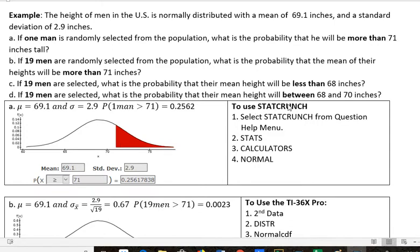And you can use StatCrunch to do that. In order to use StatCrunch, select StatCrunch from the question help menu, then stats, then calculators, then normal. And you'll see the picture here of what you'd want to enter. For the mean, we said it was 69.1. For the standard deviation, 2.9.